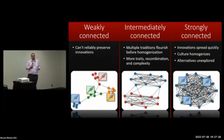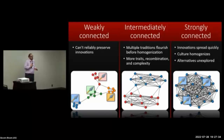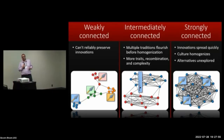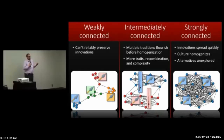Now there's a Goldilocks zone where the population is intermediately connected. What happens here is that multiple traditions are able to flourish before homogenization takes place. This results in more cultural traits, more opportunities for recombination, and therefore greater cultural complexity. An individual in the blue group invents a fishing rod — this spreads throughout the blue group, but not to the red group yet. Somebody in the red group invents the fishing spear, which spreads through the red group. Eventually they exchange these ideas, and both groups end up with a more diverse and ultimately complex culture if they're able to recombine these traits.